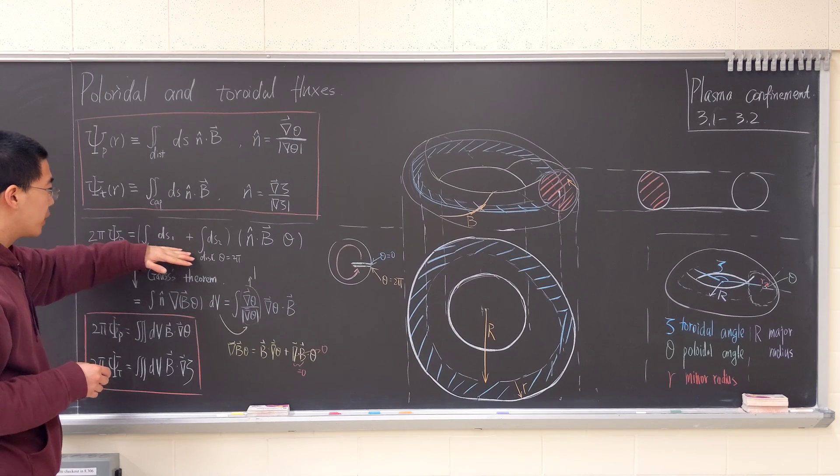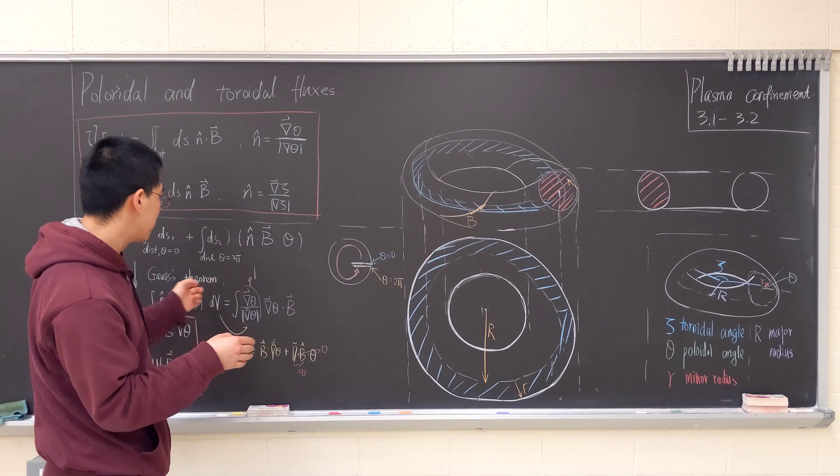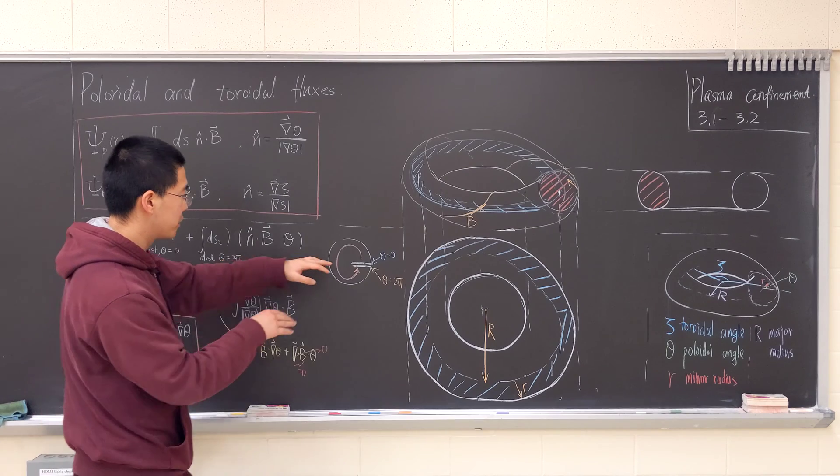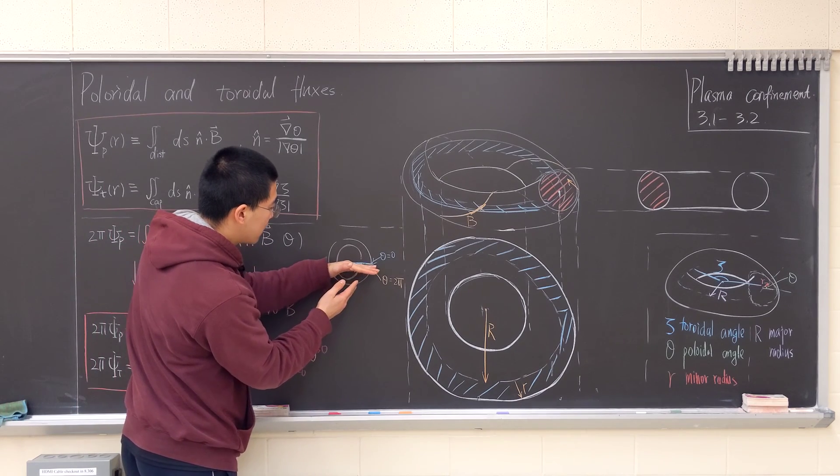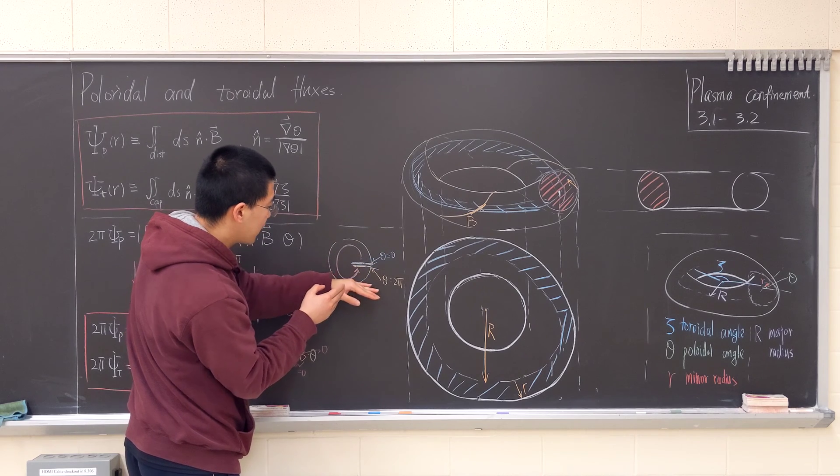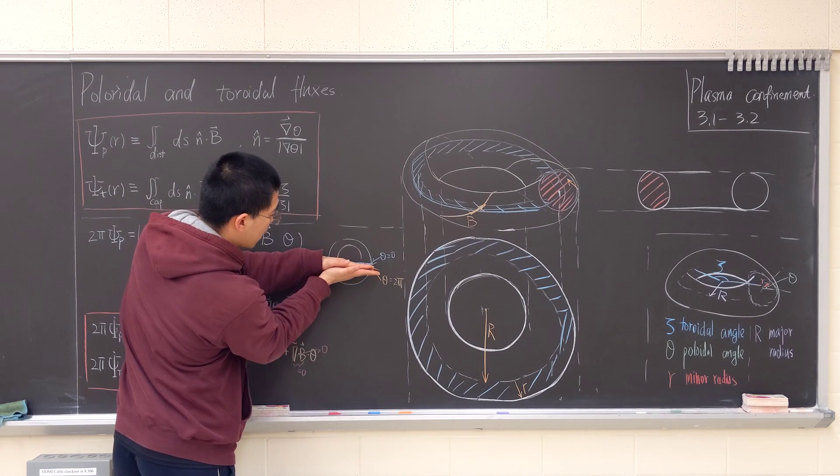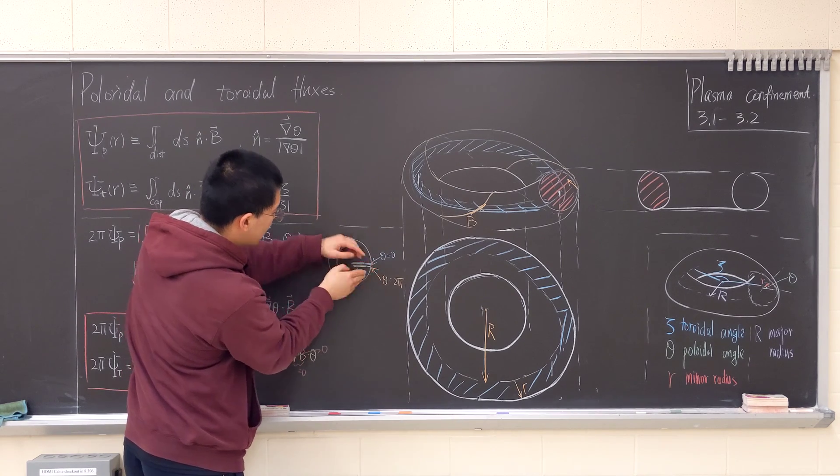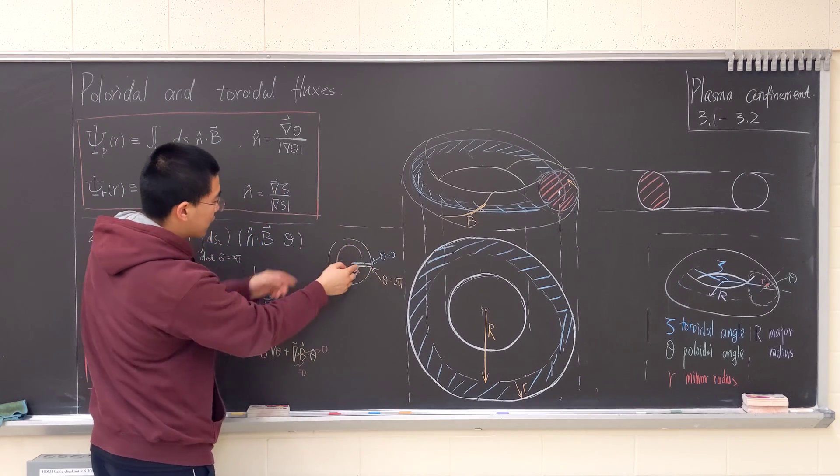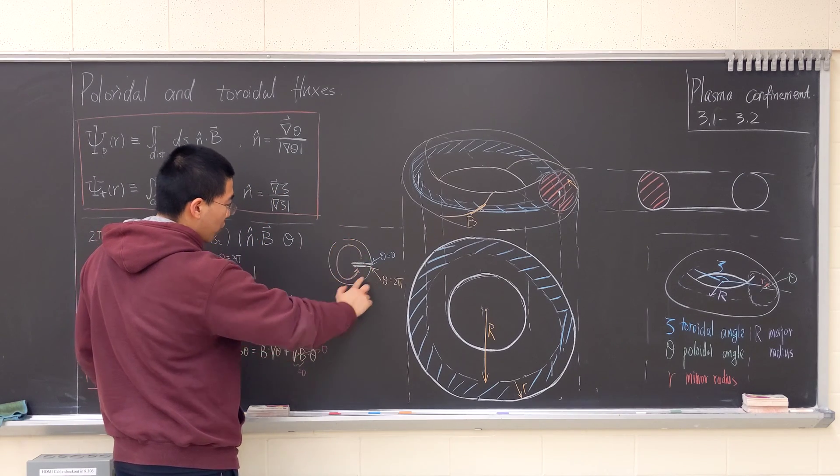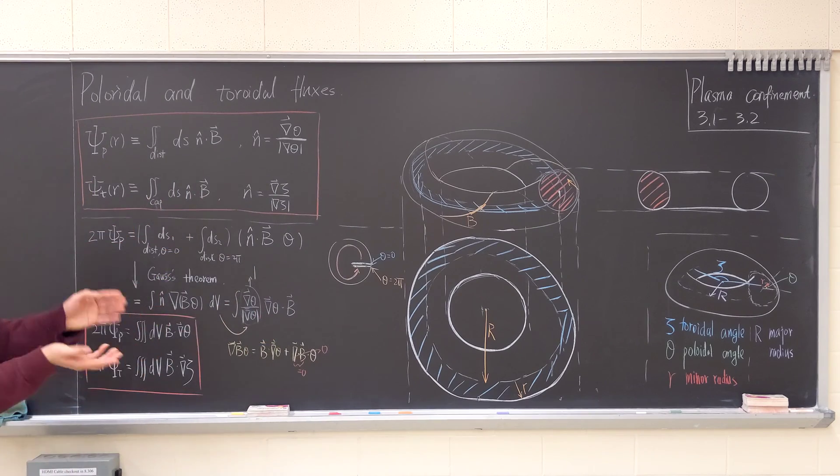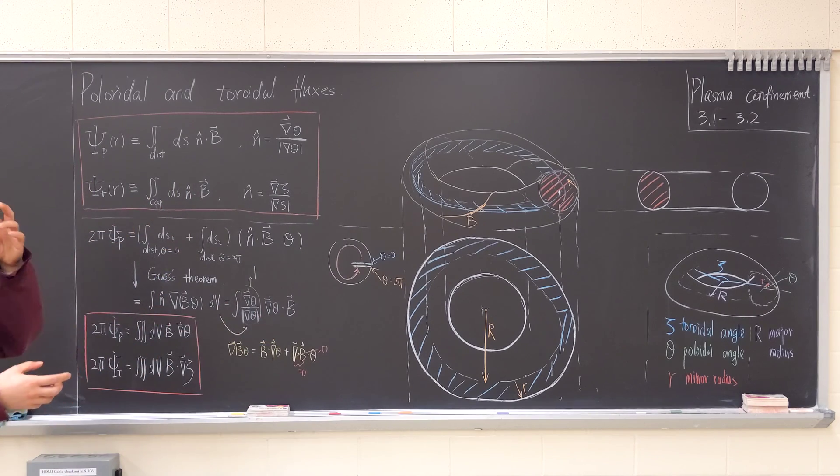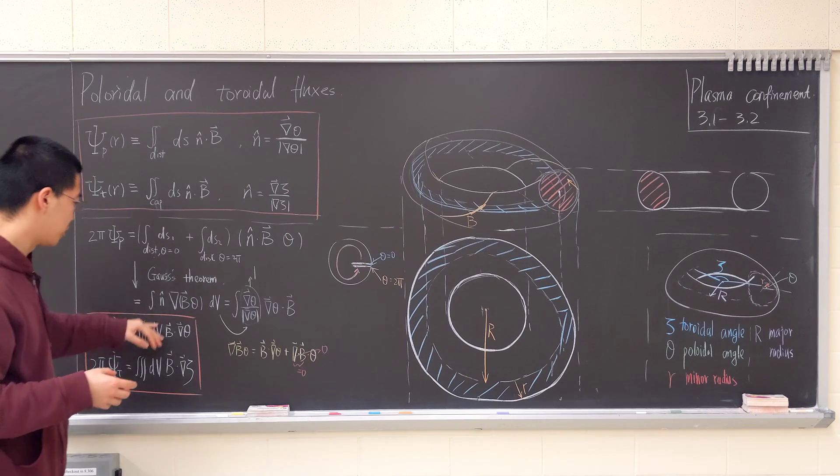So, if we make an enclosed surface, because we want to use the Gaussian theorem, so we have two surfaces. One is theta equal to zero, another is theta equal to two pi. It's like this. So this, and then the whole state, the whole volume is enclosed, like volume. So the whole torus, the volume of the torus is what we want to have.